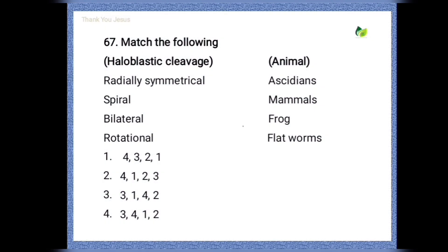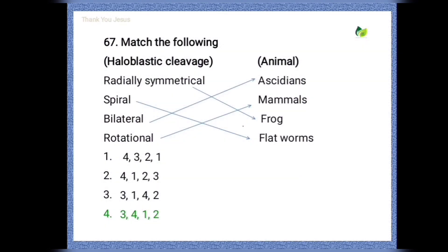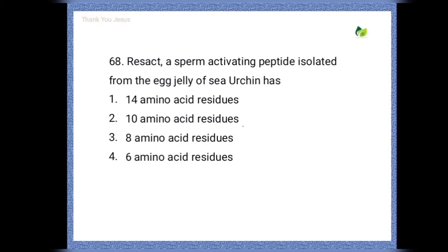Match holoblastic cleavage types with animal names. Radial symmetrical cleavage is seen in frog; spiral holoblastic cleavage is seen in flatworms; bilateral cleavage is seen in ascidians; rotational cleavage is seen in mammals.